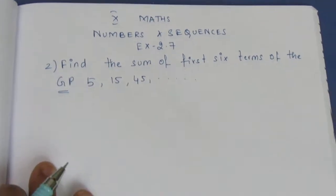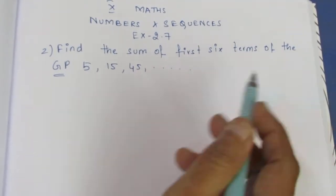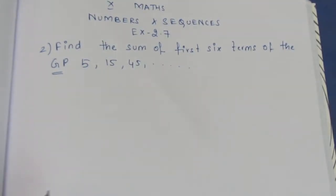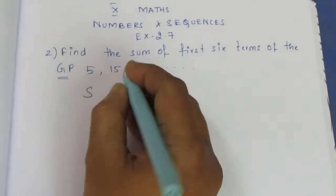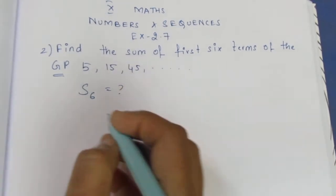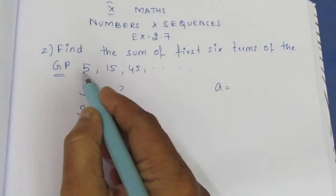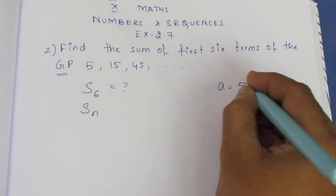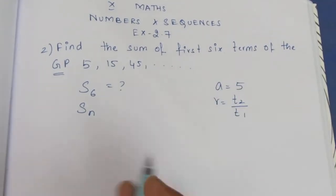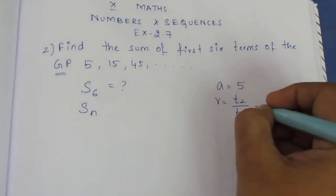So, the sum of the first six terms of the GP — the six terms are given as 5, 15, 45, and so on. We need to find S6. The common ratio R is found by dividing the second term by the first term — that means 15 divided by 5.